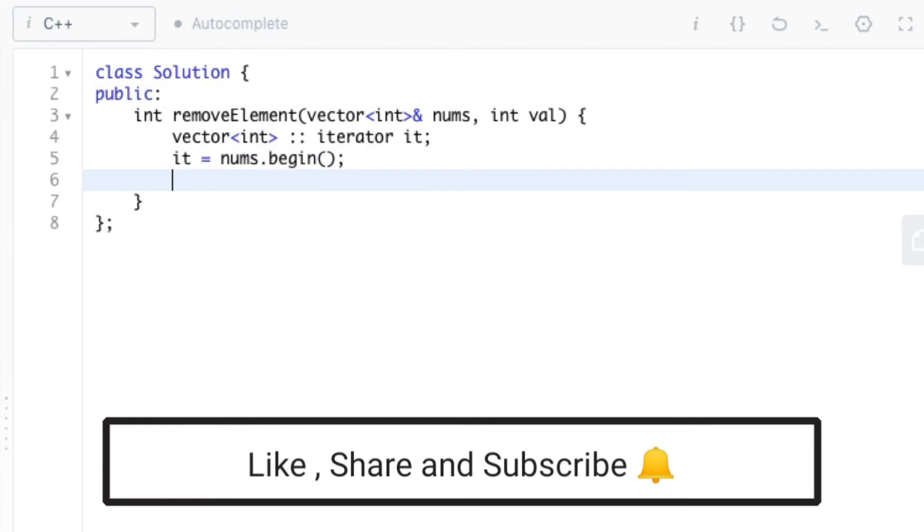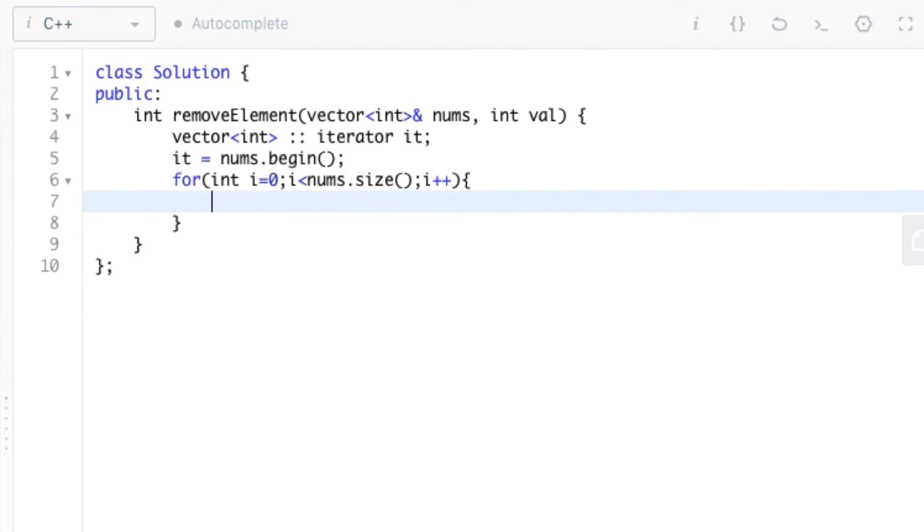Now we need to traverse the nums vector or nums array. And at each traversal, we need to check whether nums[i] is equal to val. If so, we need to erase the value nums[i] from nums vector.